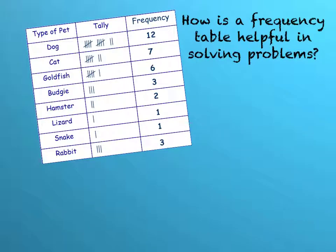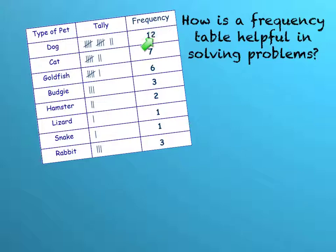So just to sum it up — how is a frequency table helpful in solving problems? If you're just looking at a tally table, that's a lot of data to look at, a lot of tallies, and it's more complicated. So take your tally table and create your own frequency table so you can see the actual numbers. Once you do that, you can use those numbers to create your number sentences to solve your problems. Always create a frequency table from a tally table. Are you ready to do some on your own? Let's go!